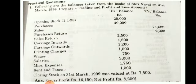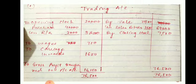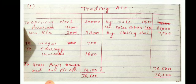We add the credit side total: net sales of seventy thousand plus closing stock of seven thousand five hundred gives seventy-six thousand five hundred. We then subtract all debit side amounts — twenty thousand, thirty-eight thousand, seven hundred fifty, and one thousand six hundred — and when subtracted from seventy-six thousand five hundred, we get a gross profit of sixteen thousand one hundred fifty rupees. This gross profit is transferred to the profit and loss account.